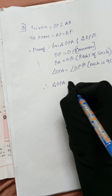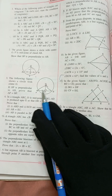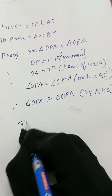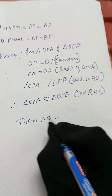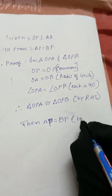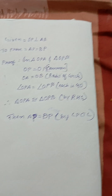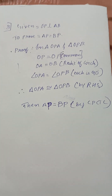Therefore, triangle OPA is congruent to triangle OPB by RHS — Right angle, Hypotenuse, Side. The hypotenuse here is 90 degrees. So AP equals BP by CPCTC. This is the answer to the third question.